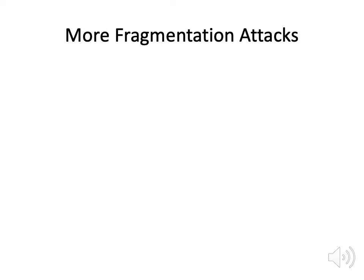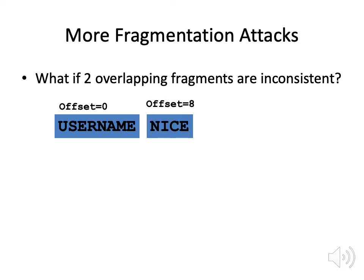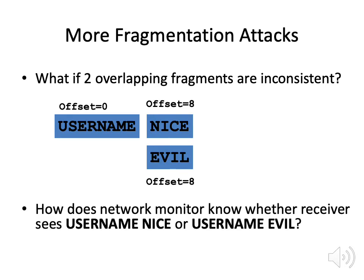Another fragmentation attack involves sending two packets that are overlapping or inconsistent. For example, at offset zero we have 'username', at offset eight we have 'nice', and then we send another fragment at offset eight with 'evil'. How does a network monitor know whether the username is 'nice' or 'evil'? It doesn't know what packet will be received by the host. The two fragments could be reordered before delivery, and the host may have its own policy for resolving inconsistencies, making it hard for a monitor to determine what will actually happen.